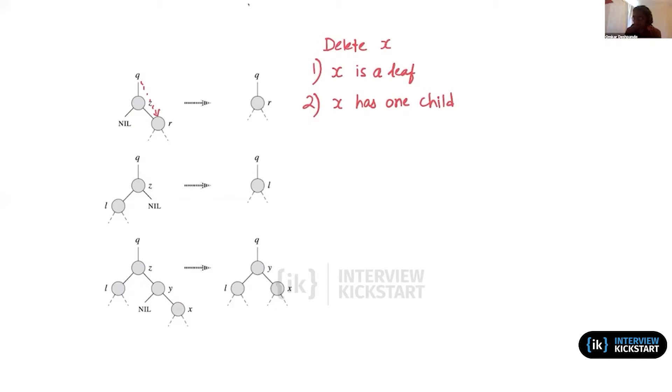A symmetric case is where z does not have a right child; it has a single child, but that single child is a left child. In that case, we would redirect the pointer from the parent of z to now point to l, bypassing z, and that would effectively remove z from the tree. So these are the two resulting structures we get when what we are removing has only one child.